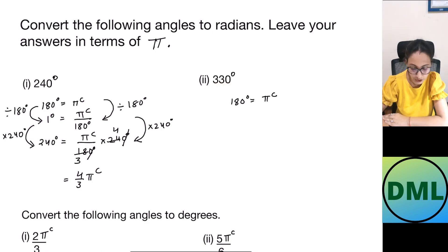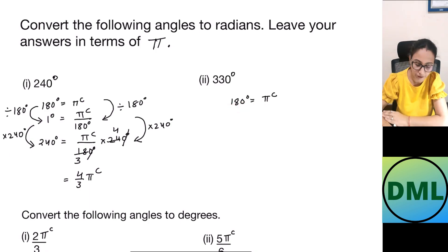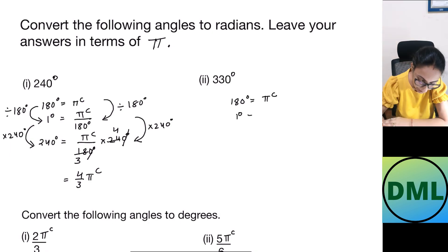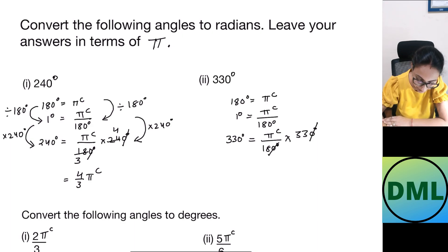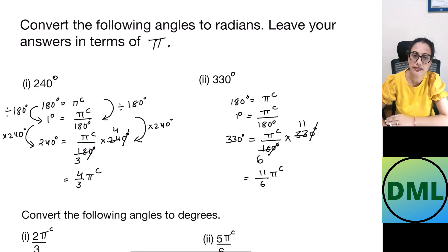Let's see one more example. Convert 330 degrees into radian measure. We know 180 degrees = π radians, so 1 degree = π/180 radians. Therefore 330 degrees = (π/180) × 330. Cancelling the zero and dividing by 3 gives 11/6 π radians. That is the answer.